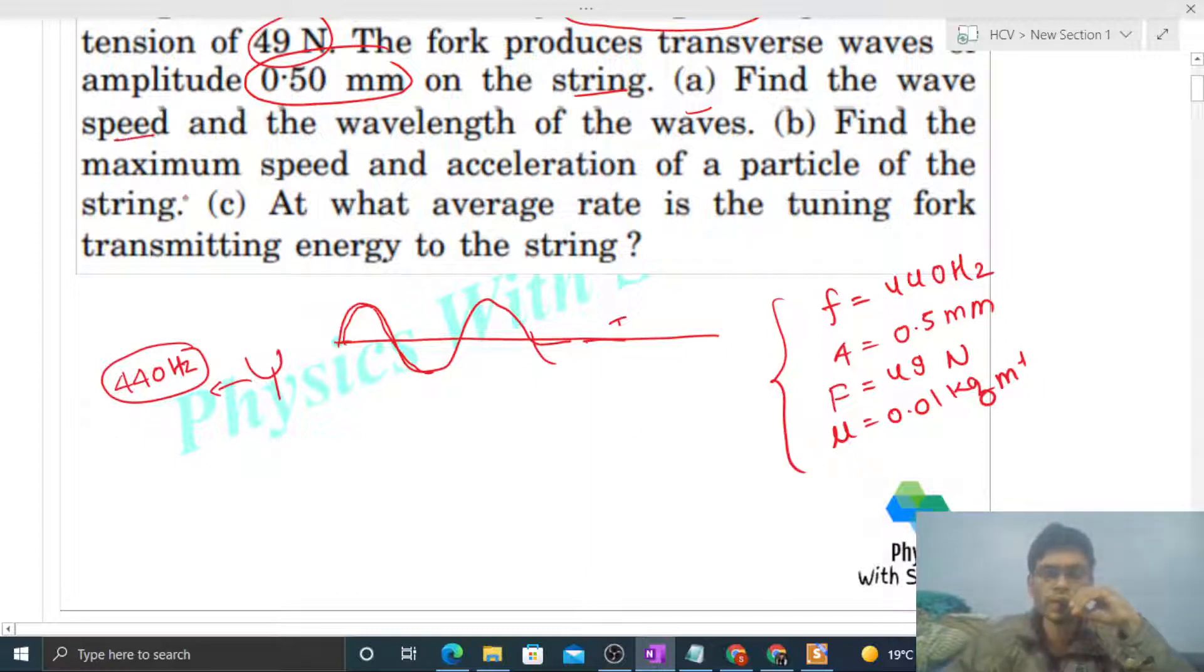Wave speed can be found using the square root of tension force divided by linear mass density. So v = √(F/μ) = √(49/0.01) = 7/0.1 = 70 m/s.